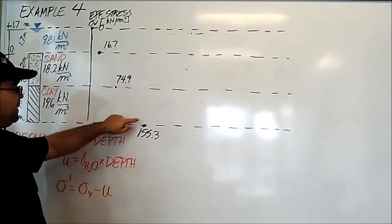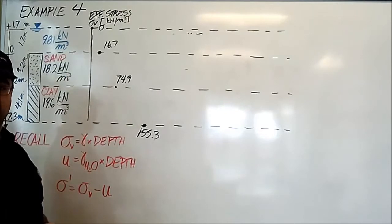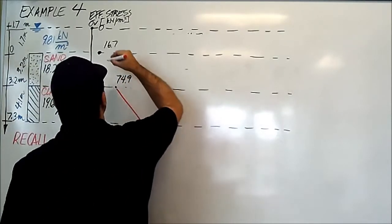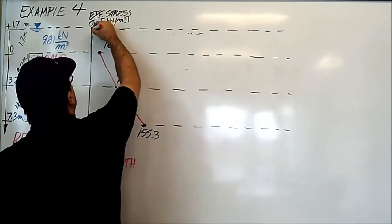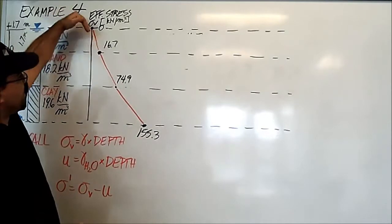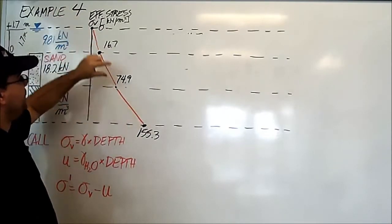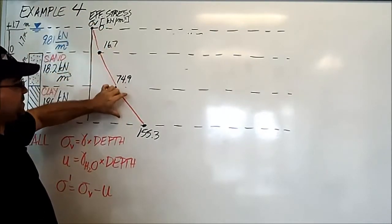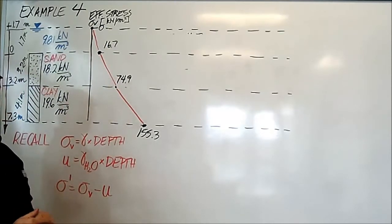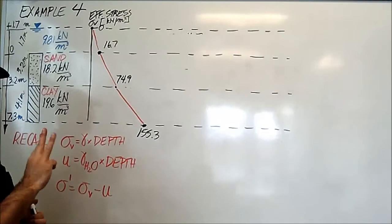I'm going to erase these calculations. And then I'm going to connect these points with straight lines. Each one of these lines has a different slope, because the density in these interfaces is different. That's not going to be the case when we do the pore water pressure, as we covered in example number three.